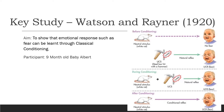This was generalised by baby Albert to any other objects similar to the white rat — anything fluffy or white. The conclusion by Watson and Rayner is that fears or phobias can be easily conditioned, especially in children. This is useful as it suggests we can decondition fears, helping develop treatments such as flooding and systematic desensitisation. However, it was only one participant, so it's not generalisable to the wider population, and we can't replicate it as it may cause too much distress.